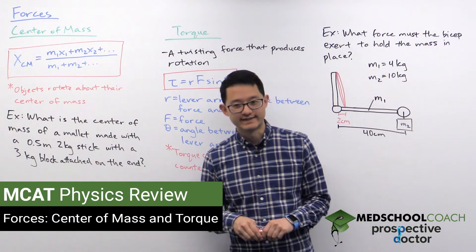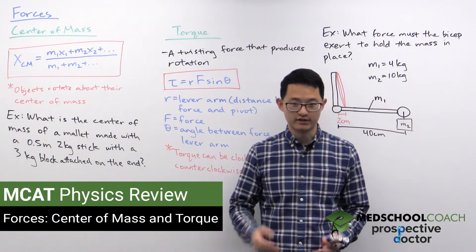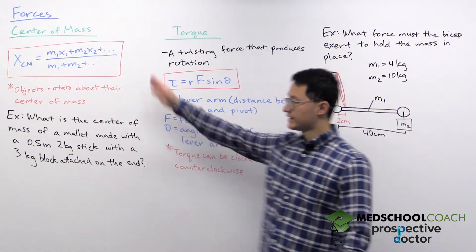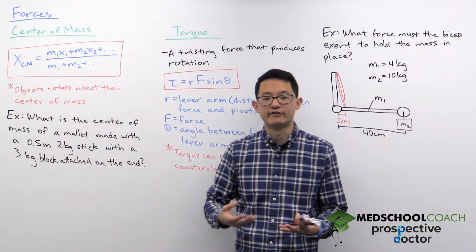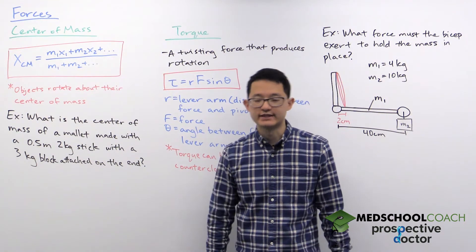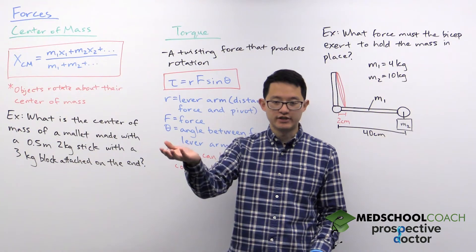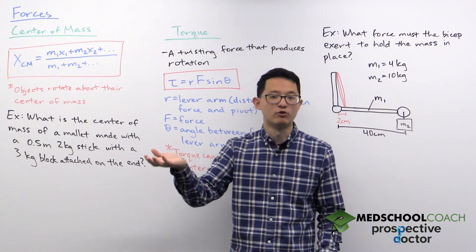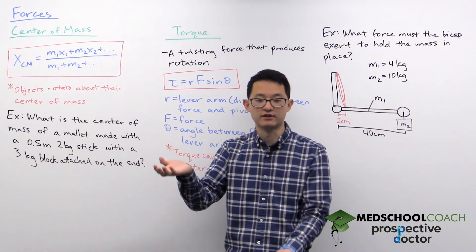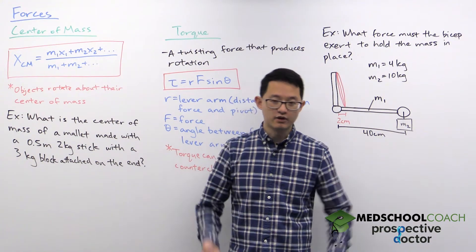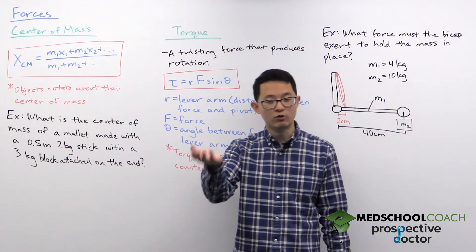In this video we're going to discuss center of mass and torque. Center of mass is fairly simply defined — it literally is the center of mass. For instance, if you were carrying a pizza box, you wouldn't want to carry it at the corner. If you put your hand under the corner of the box it's certainly going to fall, so you want to put your hand at the center of the box — at its center of mass — and it will be in equilibrium.